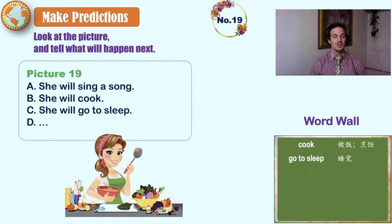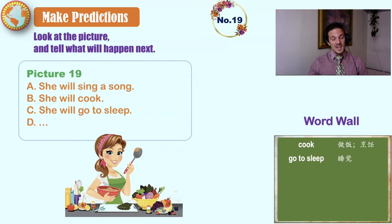Cook, go to sleep. She will sing a song. She will cook. She will go to sleep. She will make a painting. She has her hair tied back and food and ingredients on the table. She will cook.